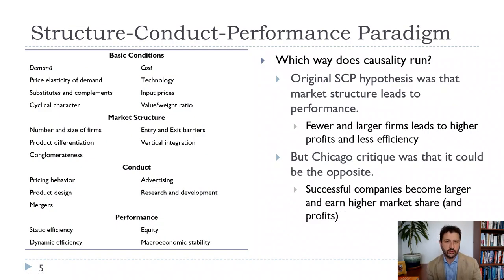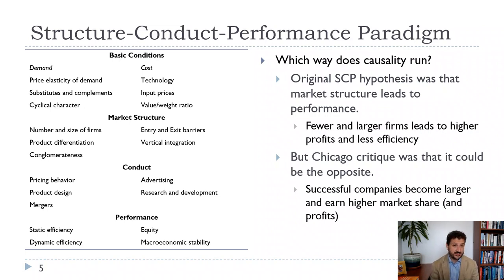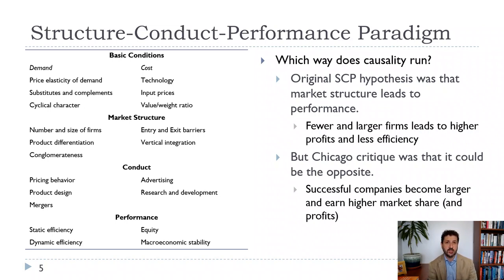This book uses what is known in the field as the Structure-Conduct-Performance, or SCP, paradigm. We want to think about a number of things: demand, which includes the price elasticity of demand that will affect firms' abilities to mark up prices; substitutes and complements; and whether there's a cyclical character of demand, or even a piece of demand that increases with innovations and then decreases over time as competition increases. We also want to think about costs — the role of technology and input prices — and the various cost structures that lend themselves more or less to monopoly or perfect competition and somewhere in between.